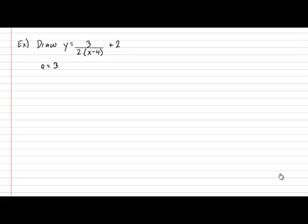Before we begin let's clearly write down the variables so that we have them in front of us. a is equal to 3, b is equal to 2, h is equal to 4, and k is equal to 2.